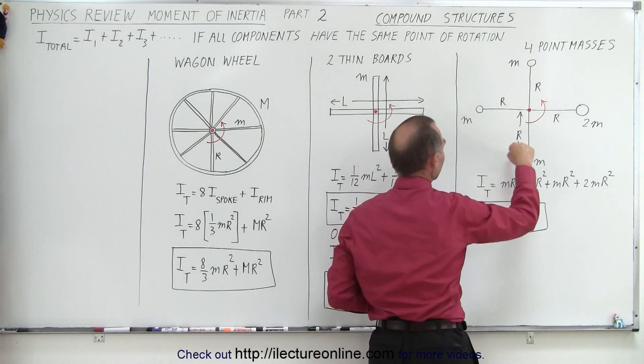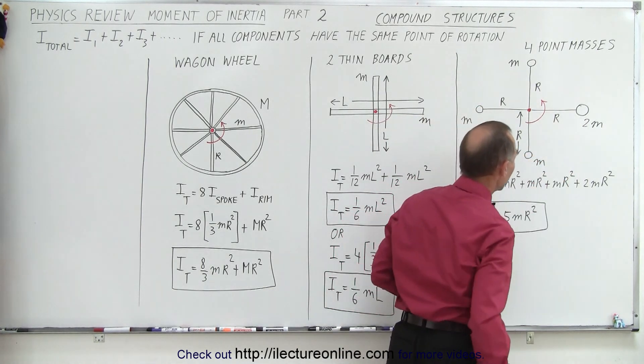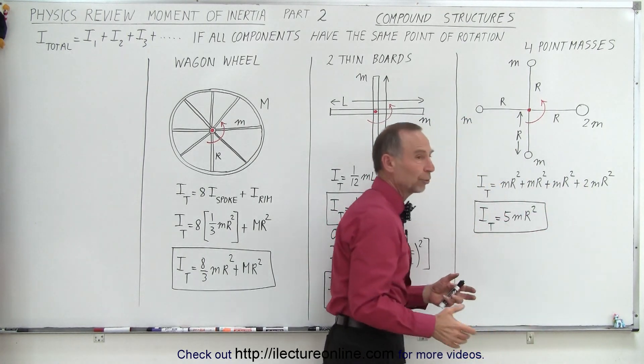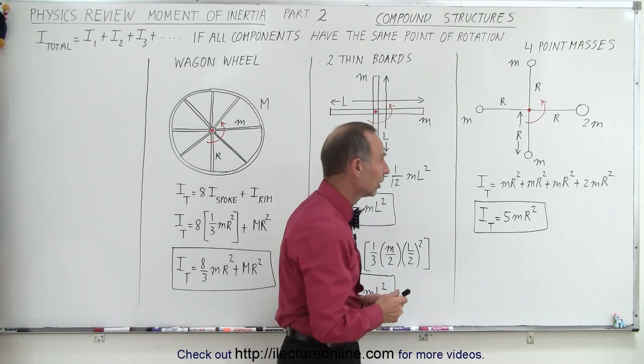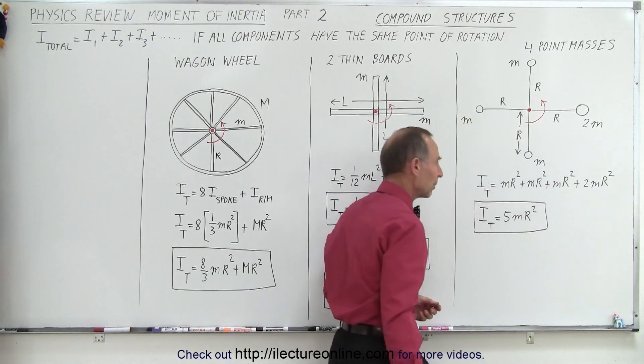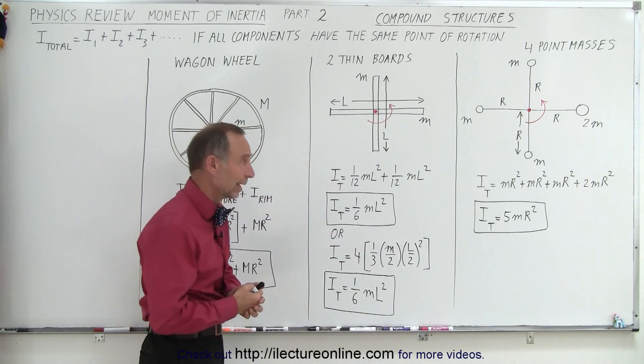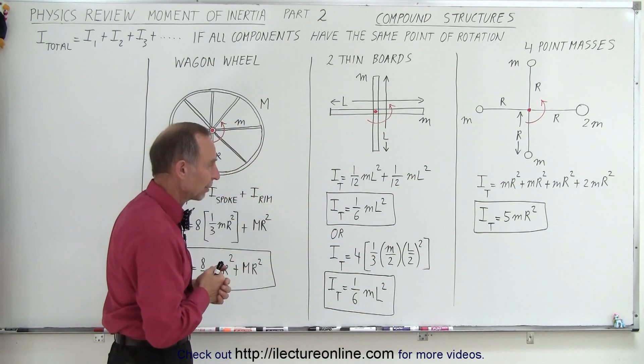Notice that three of the masses have mass m, one of them has mass 2m, so we simply add the four individual moment of inertias, which by definition is mr squared. Of course, the mass of this one is 2m, so that's why it's 2mr squared for a total of 5mr squared. We simply add them together, so it's very simple and straightforward.